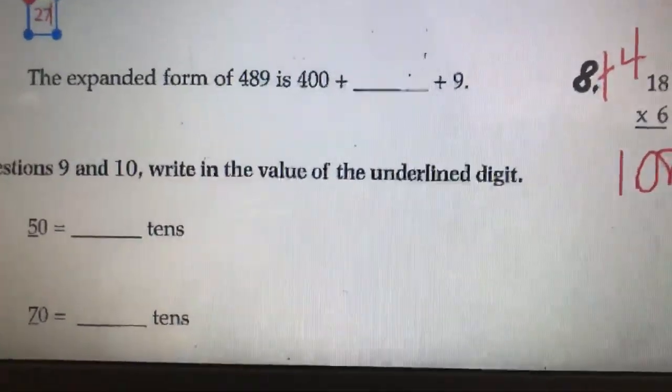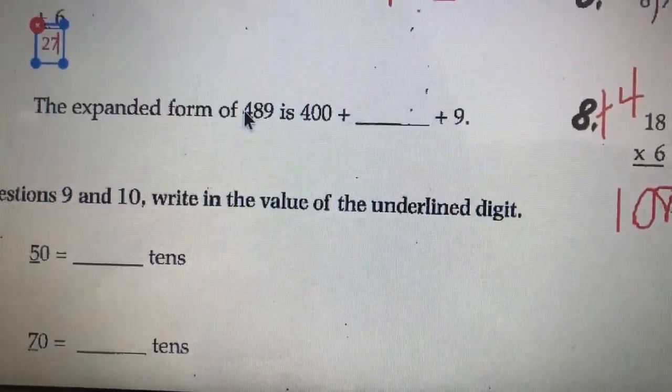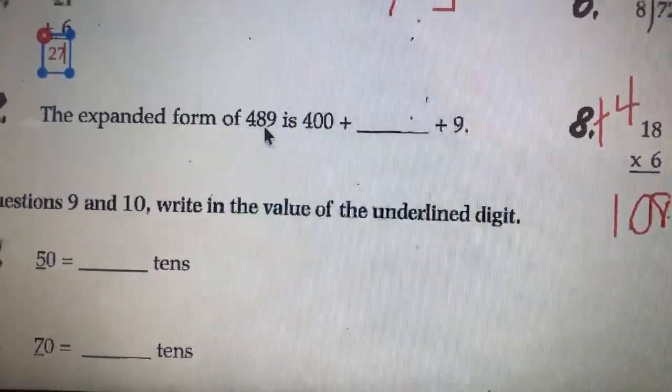The expanded form of 489 is... So, remember, that's when we're adding some 0s. So, in expanded form, we would have 400.